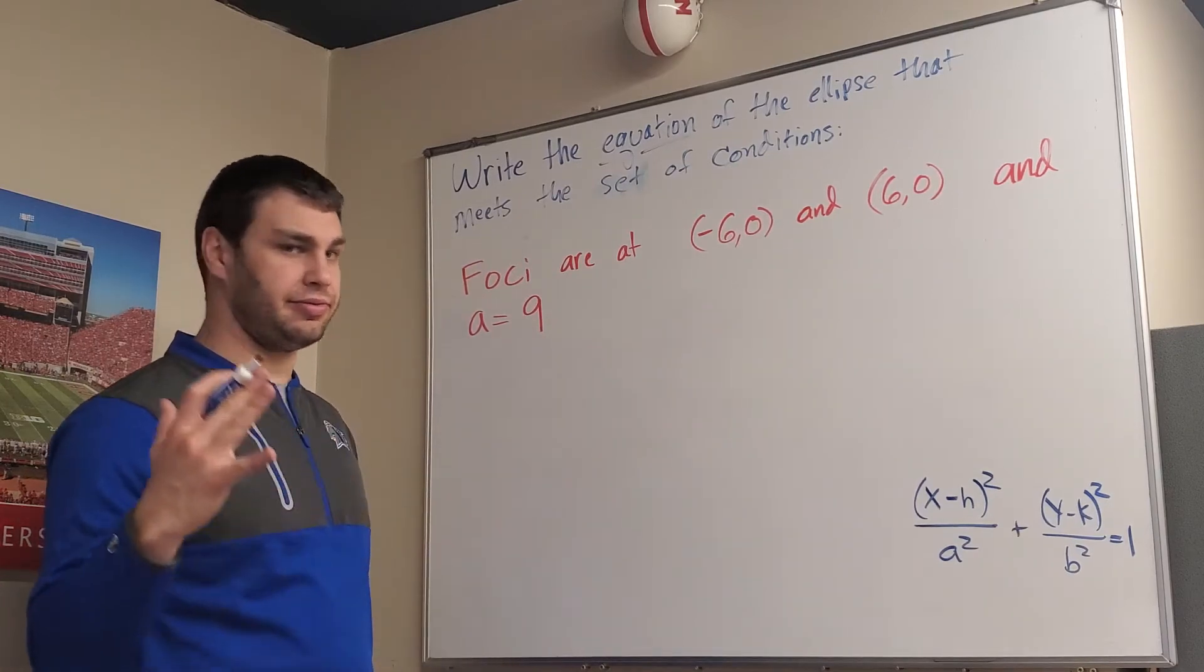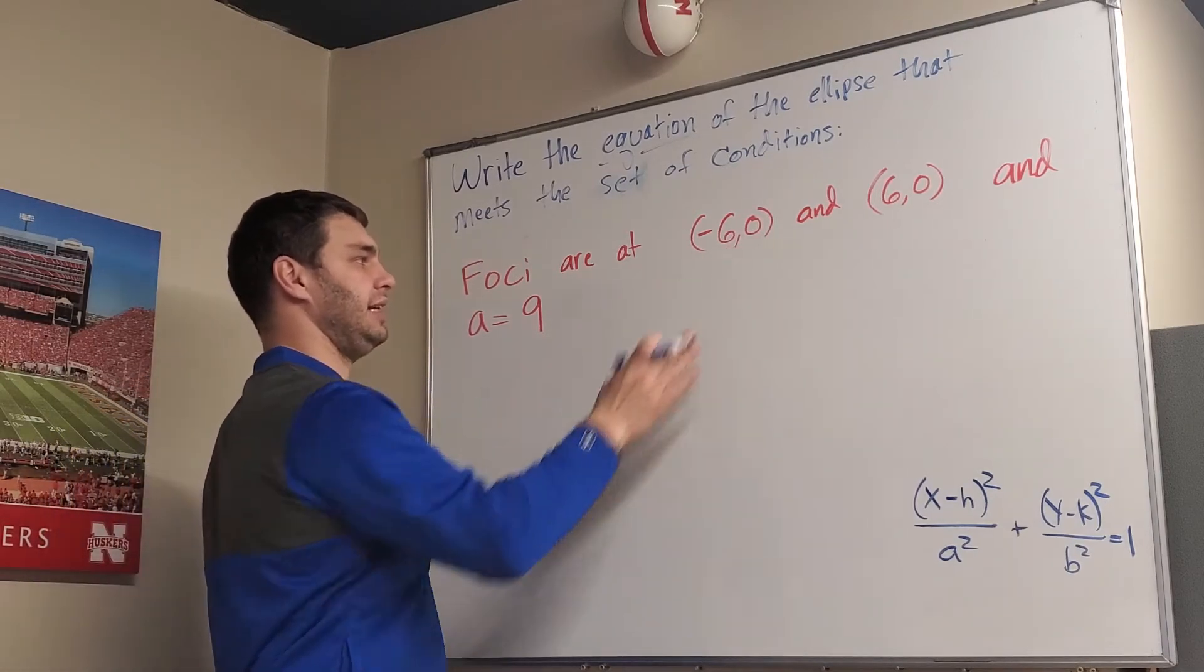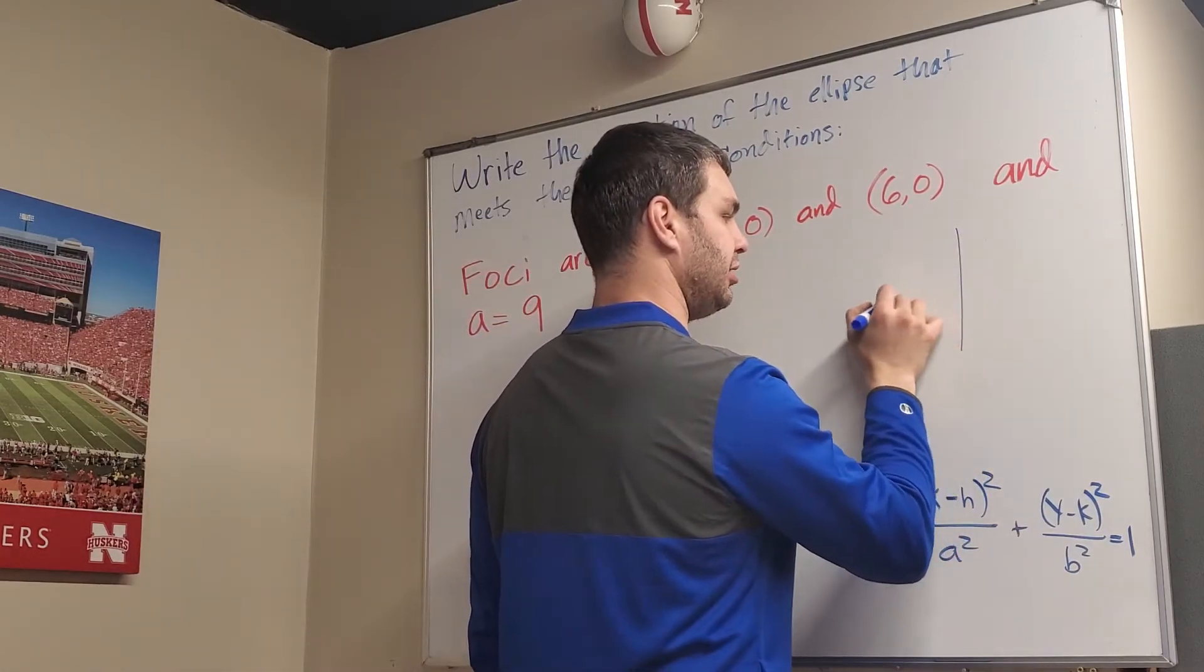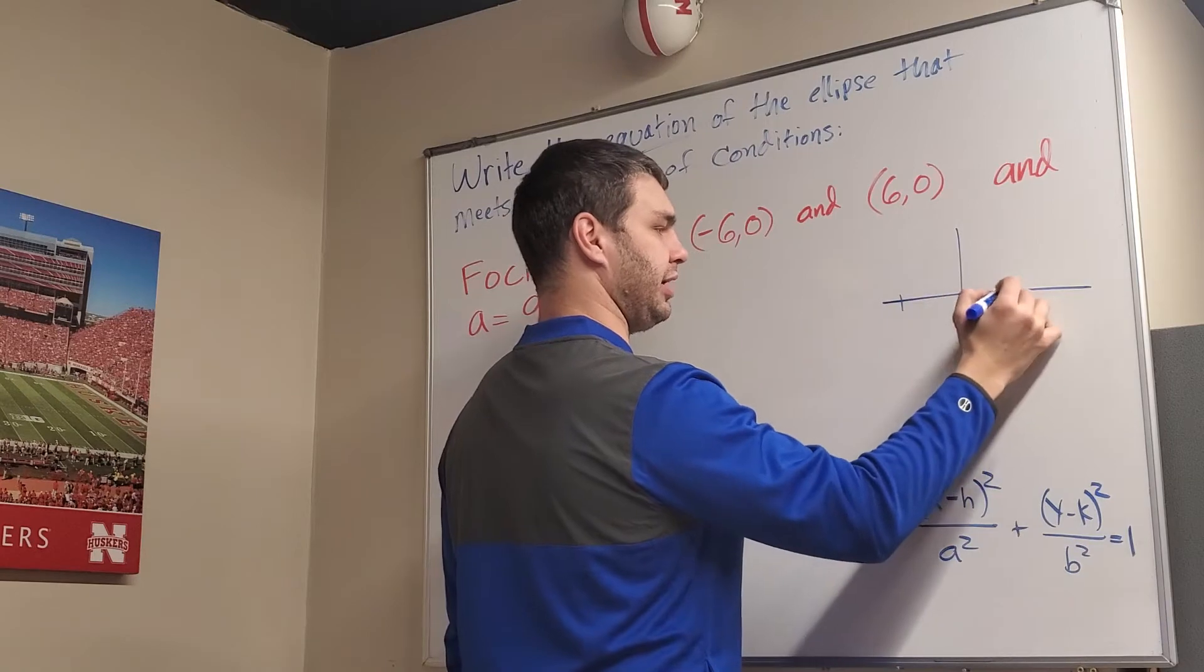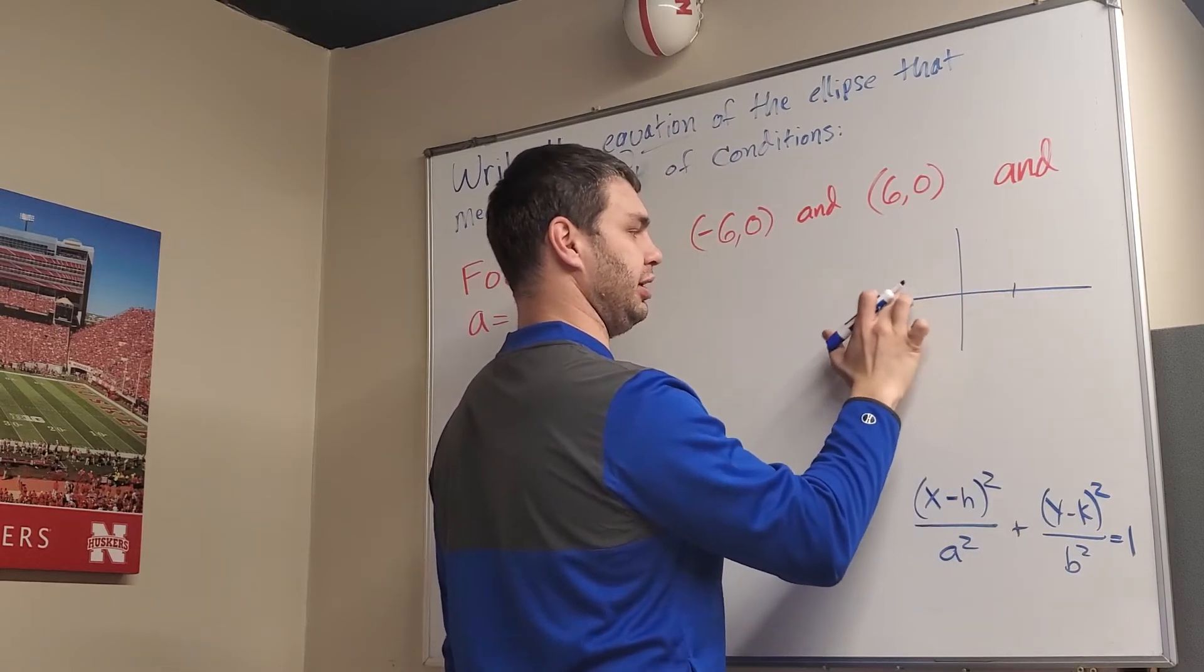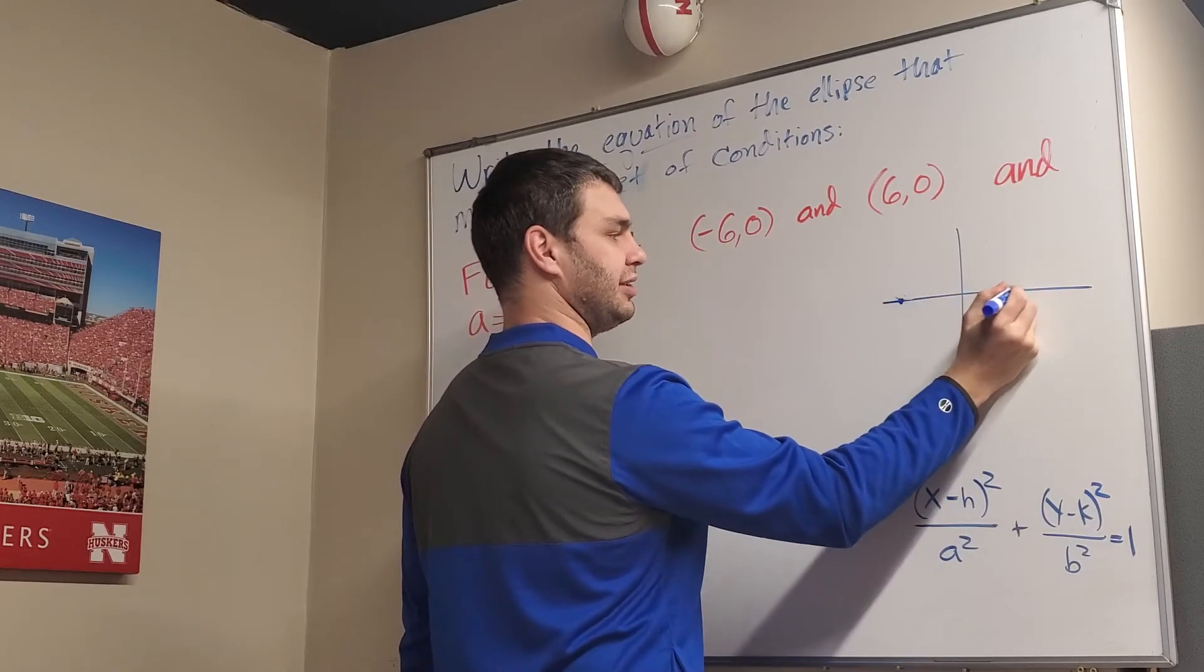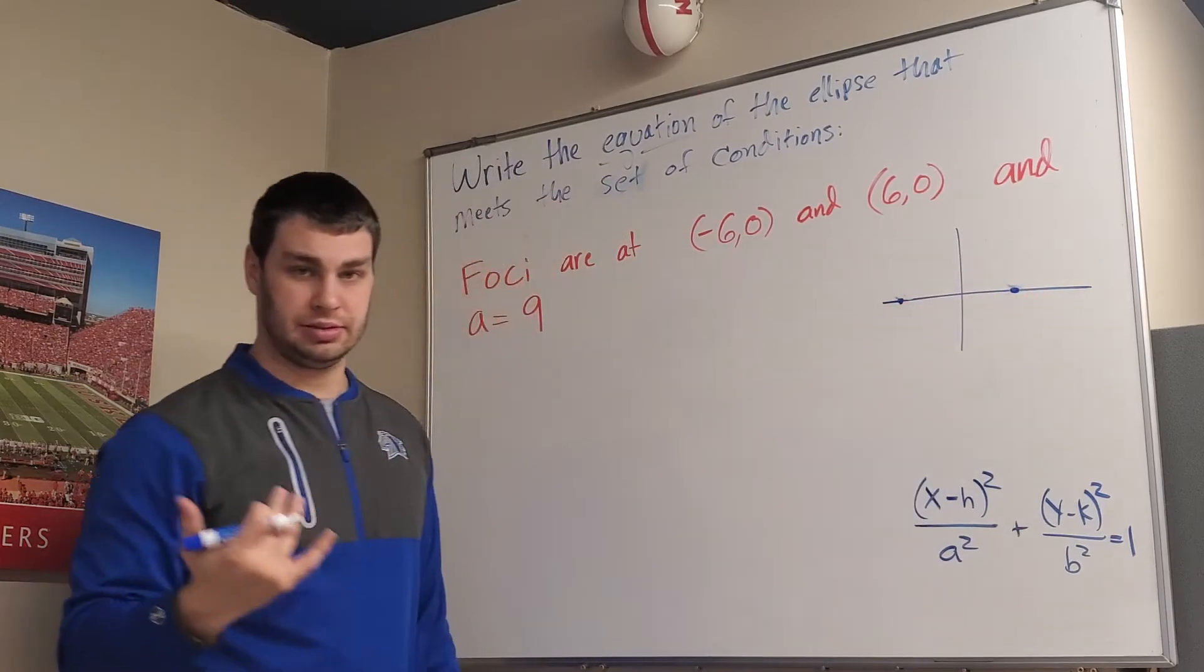But let's just think through what they do give us. The foci are (-6,0) and (6,0). So if I plot those points, I go (-6,0) and positive (6,0), those are equidistant away from the origin.